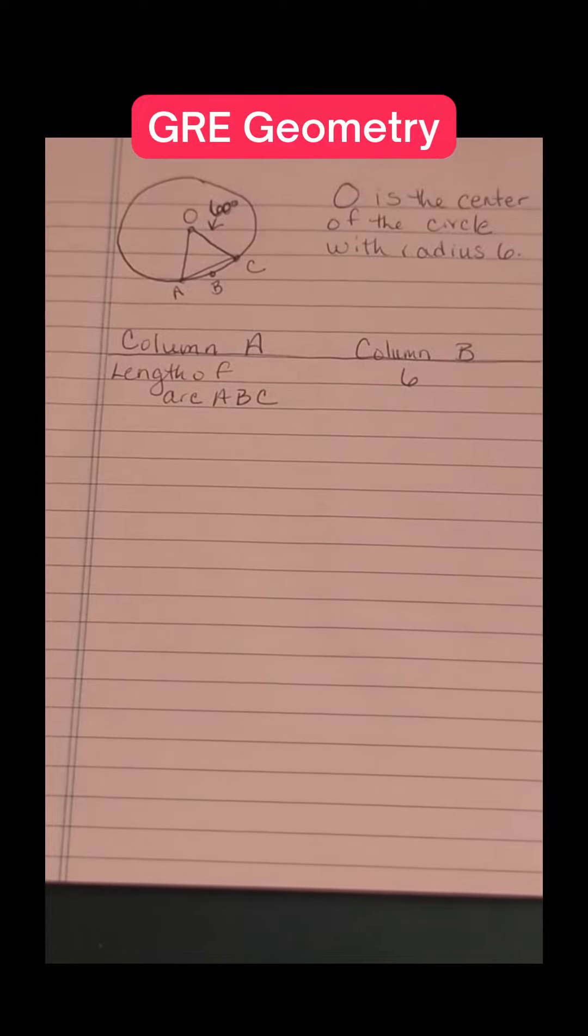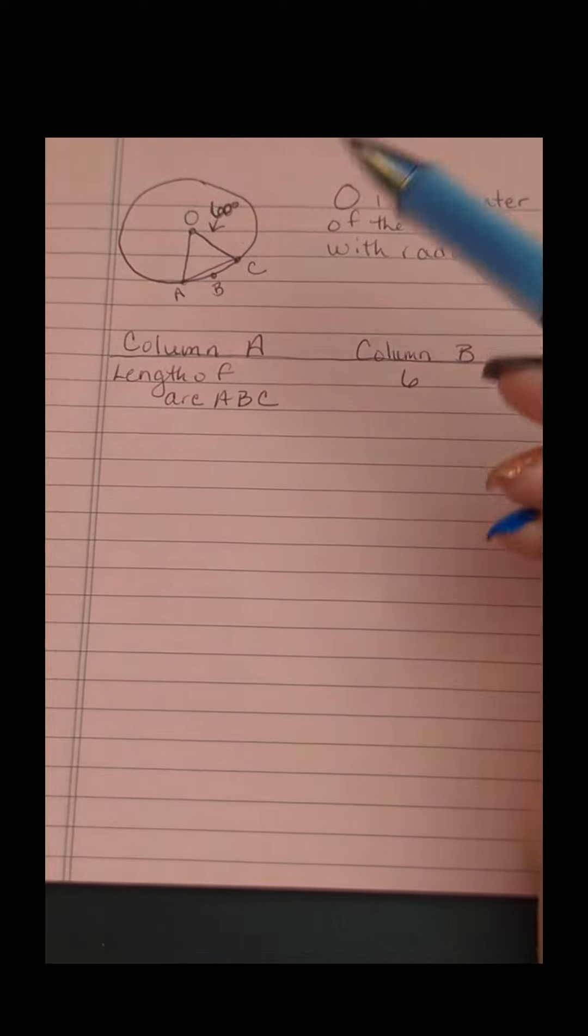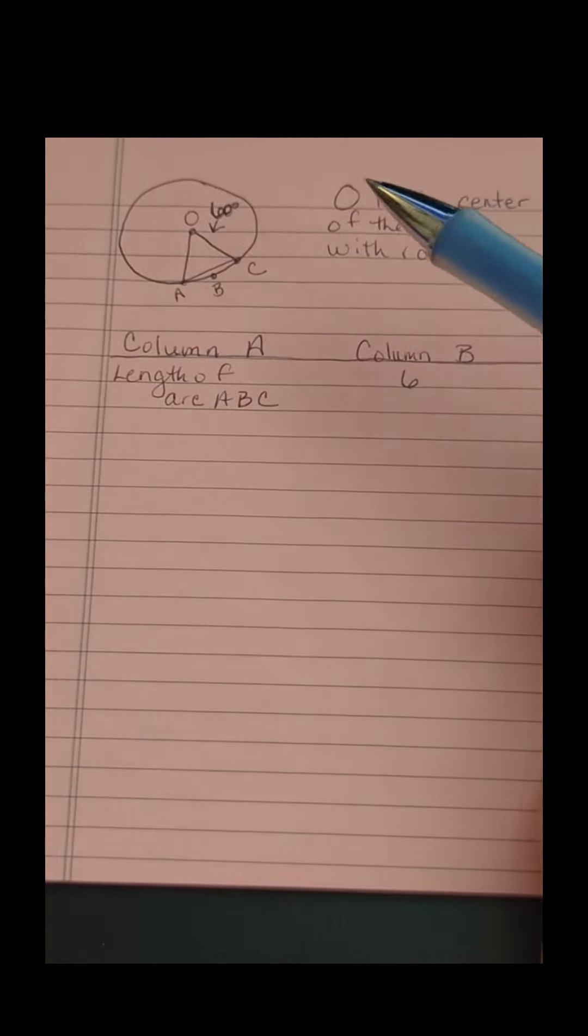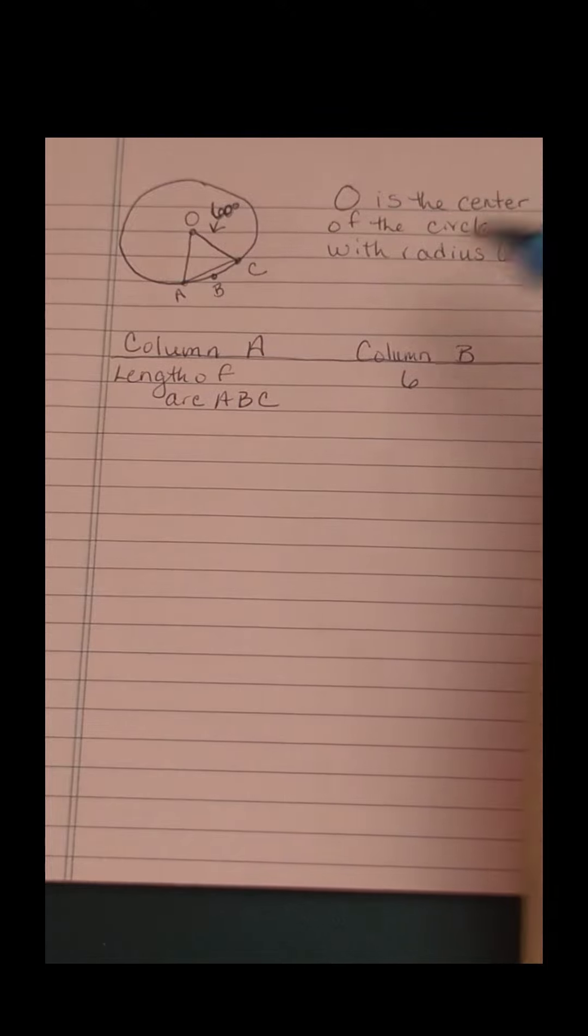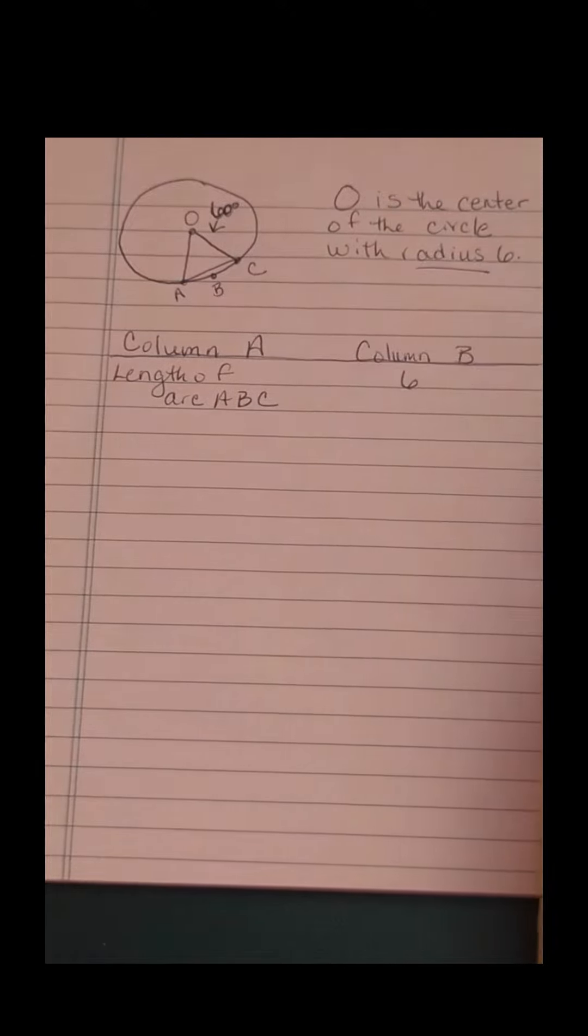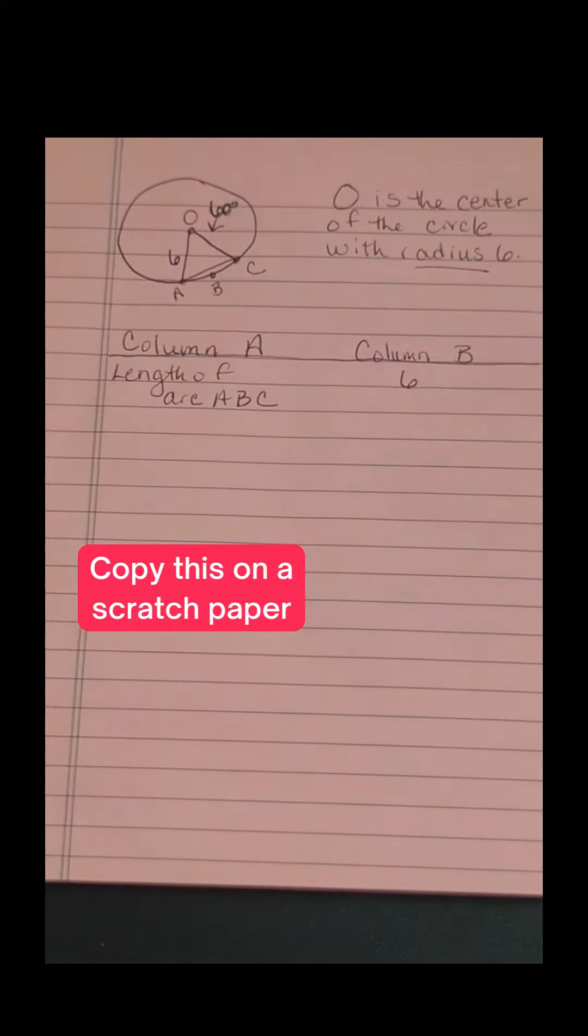Let's do a quantitative comparison question with this geometry. We have a circle with a triangle drawn inside, and the central angle is marked as 60 degrees. We're told that the radius of the circle is 6, so copy this down onto your scratch paper and mark that radius as 6.